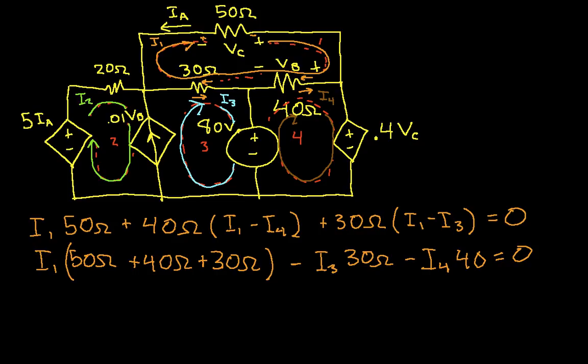Okay, so the next thing we'll do is look at mesh 2. So if we look at mesh 2, we have basically, we have a little bit of an issue, because you'll notice that this dependent current source is connected between mesh 2 and mesh 3. So we will not be able to just do KVL around mesh 2 and KVL around mesh 3. We're going to have to do a super mesh. Isn't that exciting?